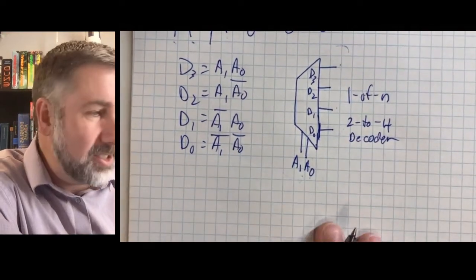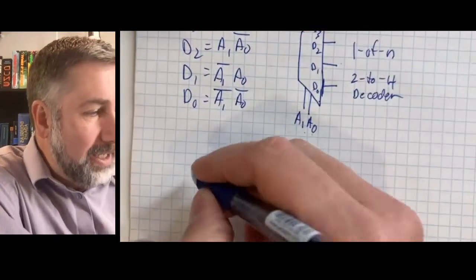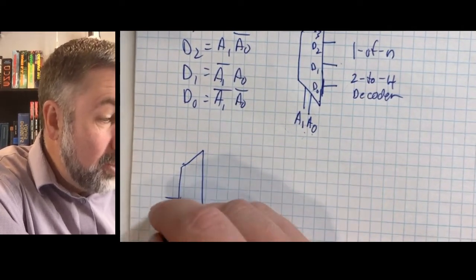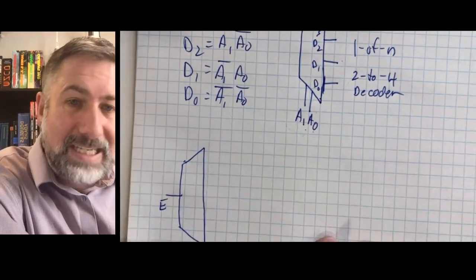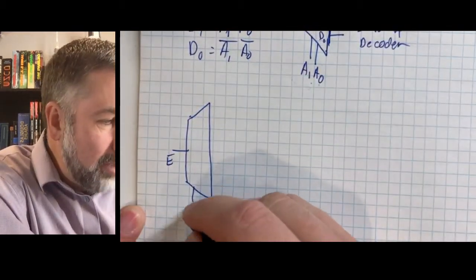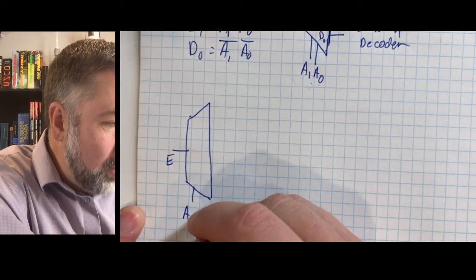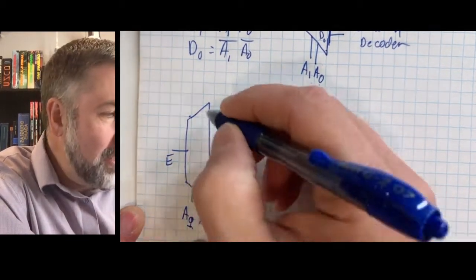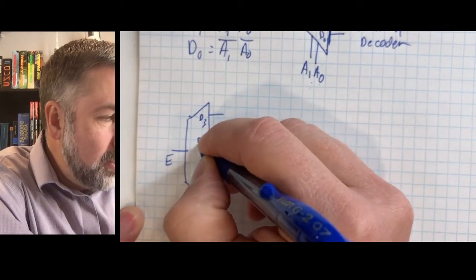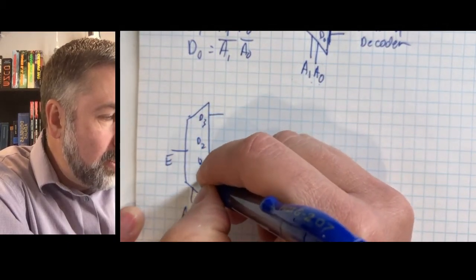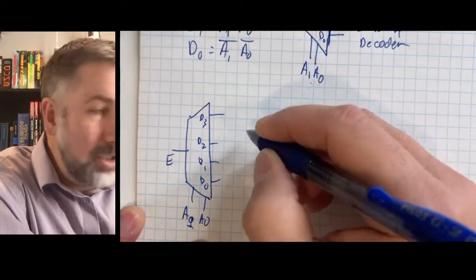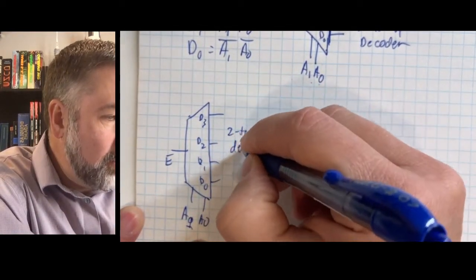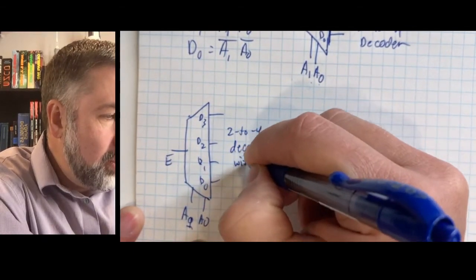So now we're going to build out this slightly different version. On your logic function software you'll see these as options — they might look a little different, but the idea is the same. We're going to have an enable, an A1 and A0 as the two address lines, and outputs D3, D2, D1, and D0. This is going to be called a 2-to-4 decoder with enable.